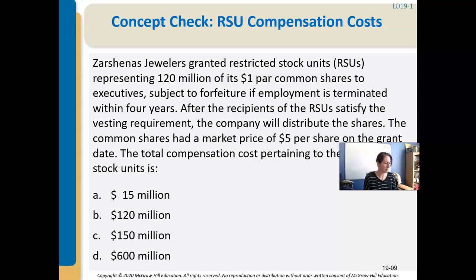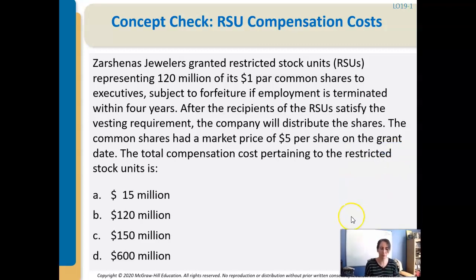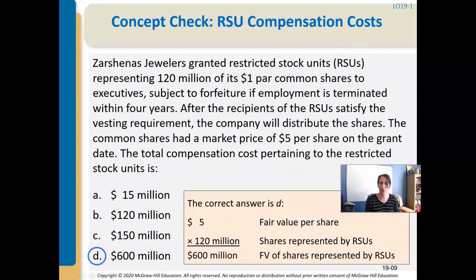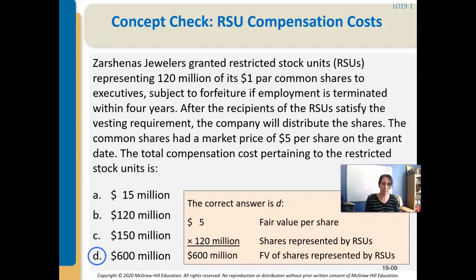Here's a quick example. You take the fair value per share times the number of shares — we're looking at 120 million shares at $5 fair value per share, giving a total of $600 million. That is the fair value of the RSU shares. We're going to spread that over the time period in the next part of the problem.